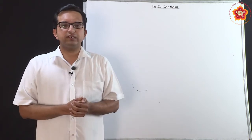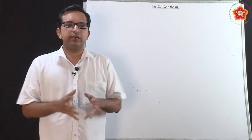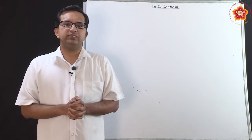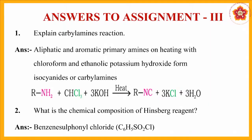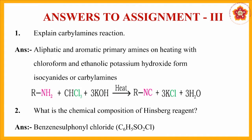Before we go into the study of this, let us see the answers for the assignment offered in the earlier segment. The first question: explain the carbylamine reaction. It is nothing but primary amines — both aliphatic and aromatic — when treated with chloroform and alcoholic KOH, we get a foul-smelling compound which is isocyanide. These isocyanides indicate the presence of primary amines, and the byproducts KCl and water are also obtained.